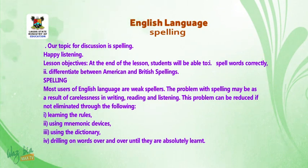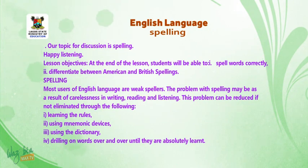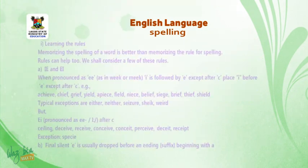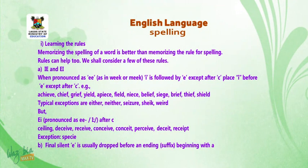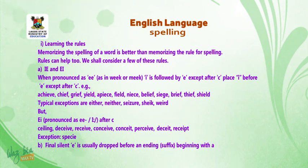Two, using mnemonic devices. Three, using the dictionary. Four, reading the words over and over until they are absolutely learned. Memorizing the spelling of a word is better than memorizing the rule for spelling. Rules can help too. We shall consider a few of these rules.